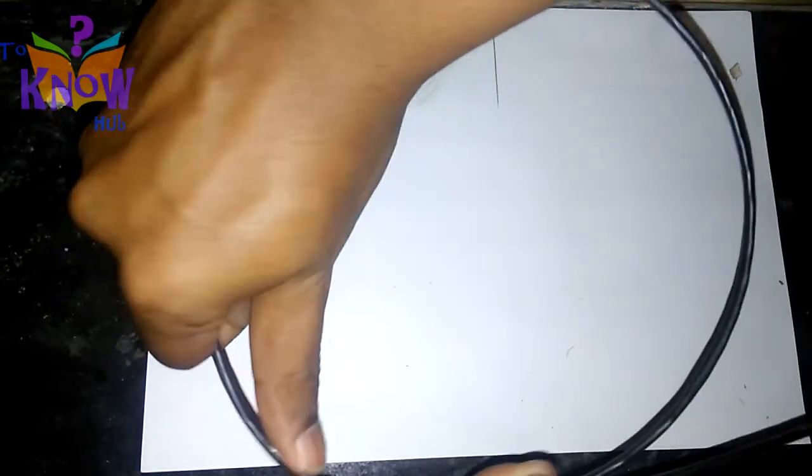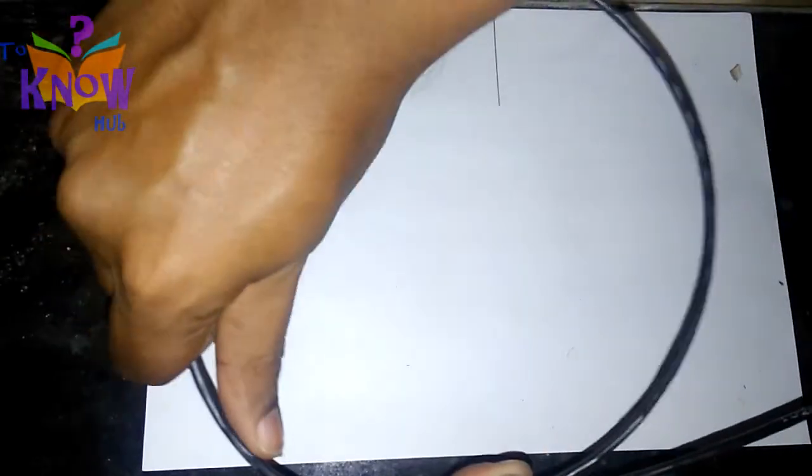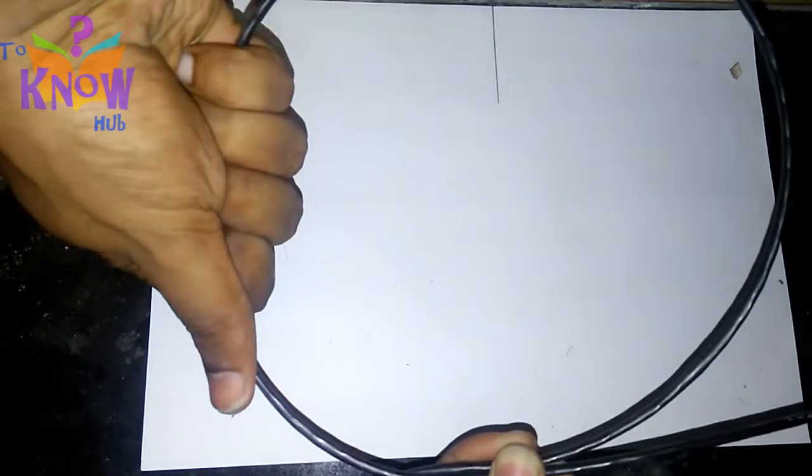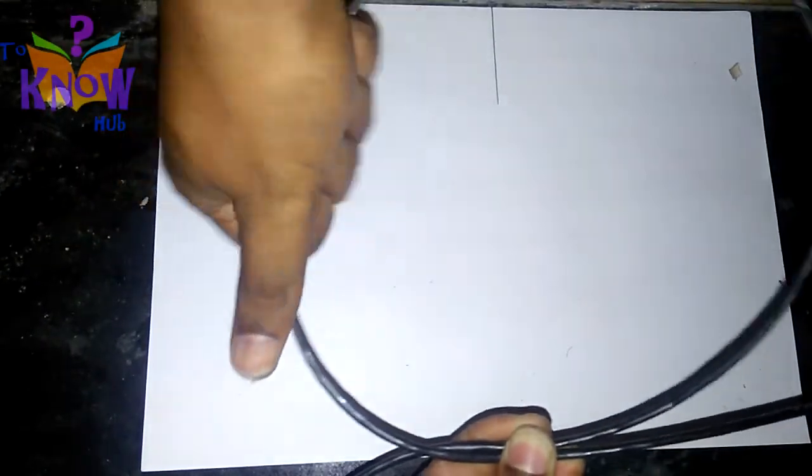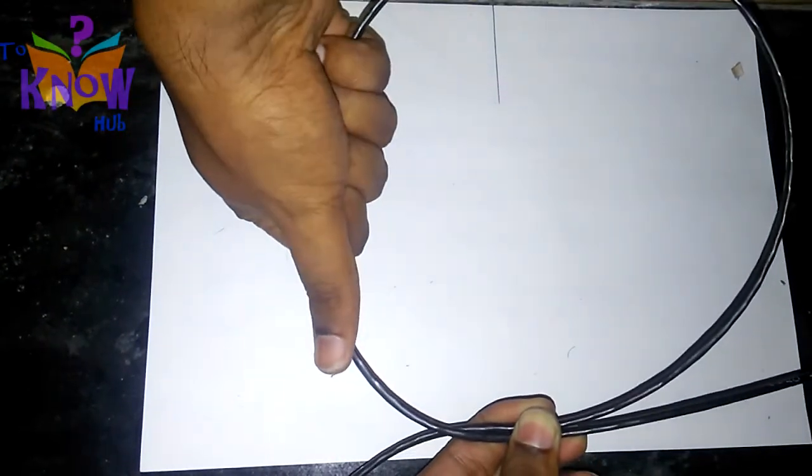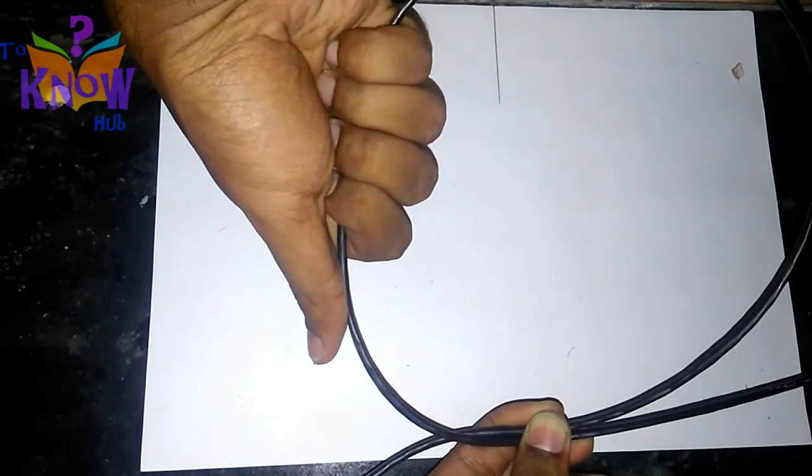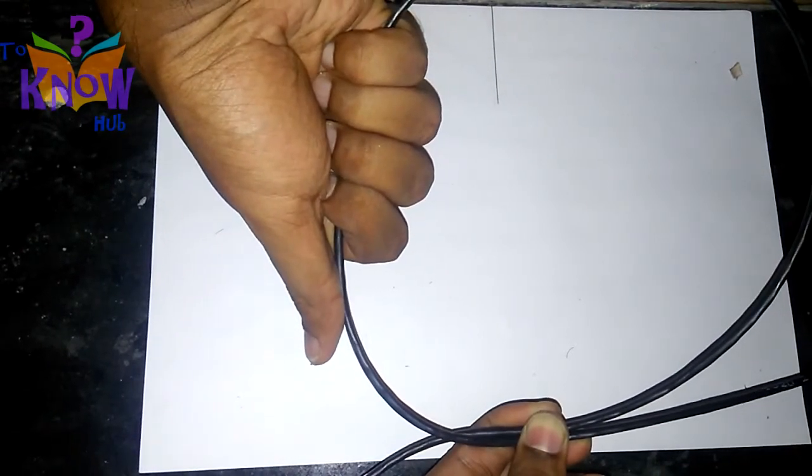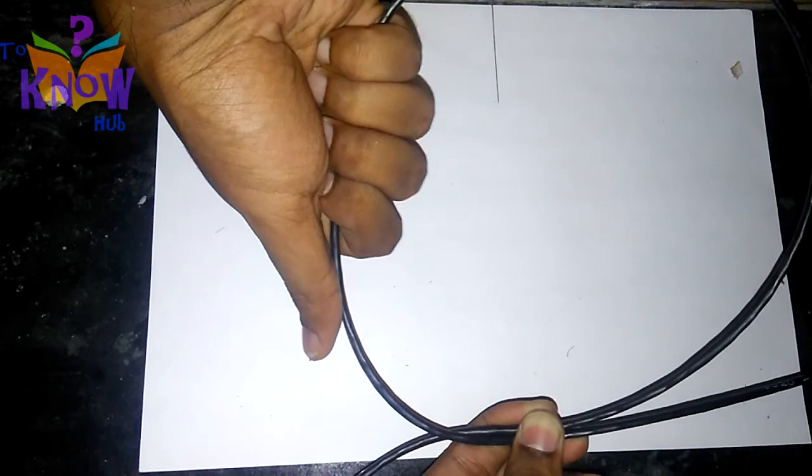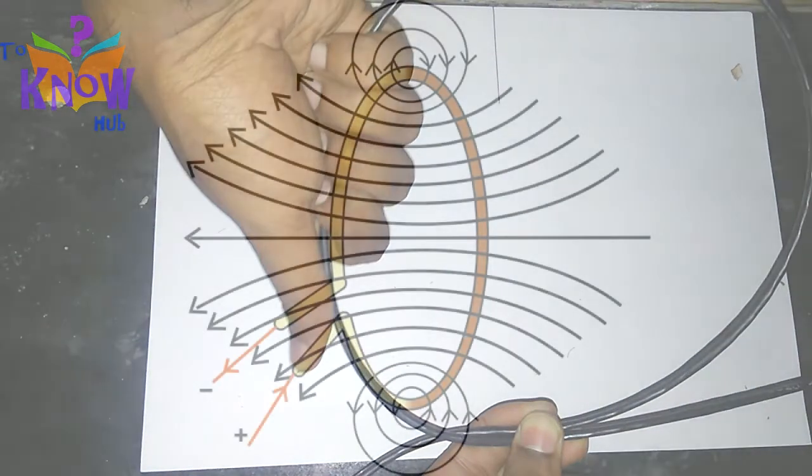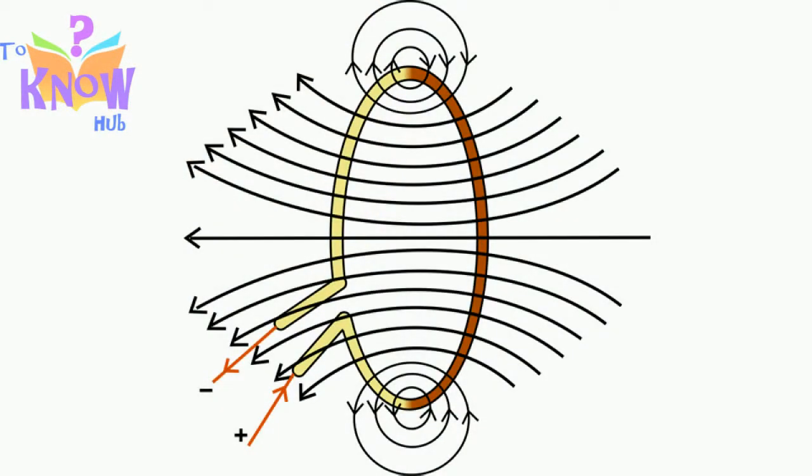Let's find the direction of the magnetic current at this point. Our thumb pointing towards the direction of the current. The direction in which our finger wraps around the conductor is the direction of the magnetic field. That is, in this direction.